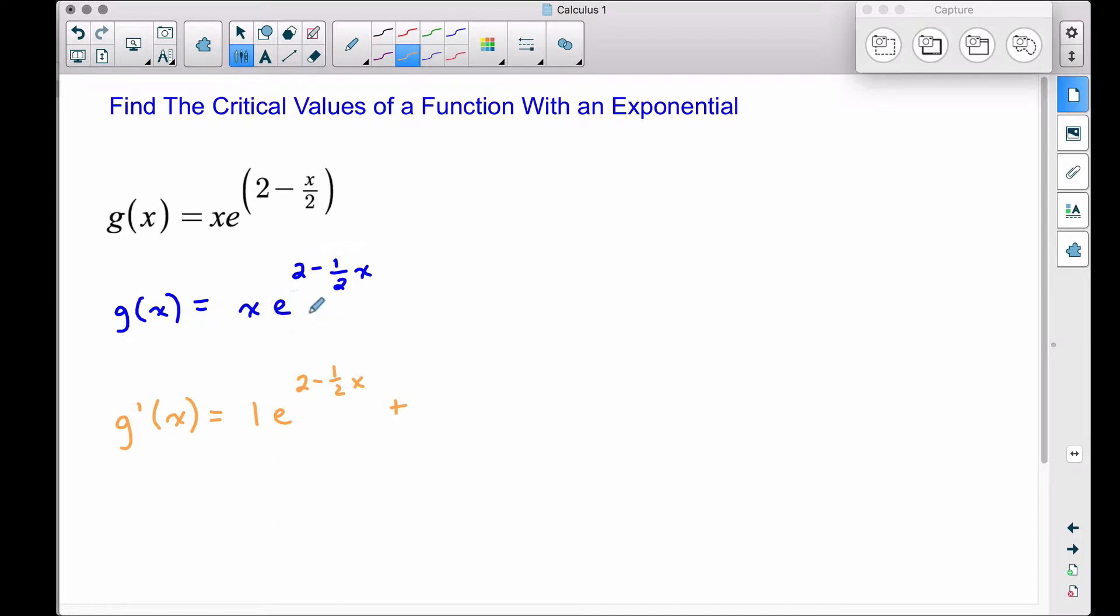Now continuing the product rule plus, now we take the derivative of this piece and we leave this other function alone. This is the product rule for differentiation. The derivative of e to this stuff is going to be e to that stuff. But then we have to come back and apply the chain rule and multiply by the derivative of this exponent here. The derivative of two minus one half x is simply negative one half. But also remember to come back and leave this function here, that x alone. This is the product rule.